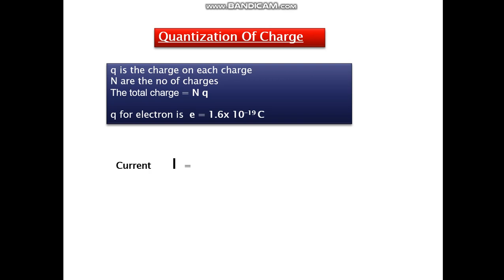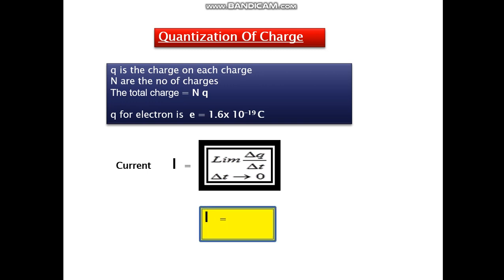Current I, we already know, is nothing but the rate of flow of charges. So we can write limit delta T tending to 0, delta Q upon delta T as current. So I is nothing but Q upon T.